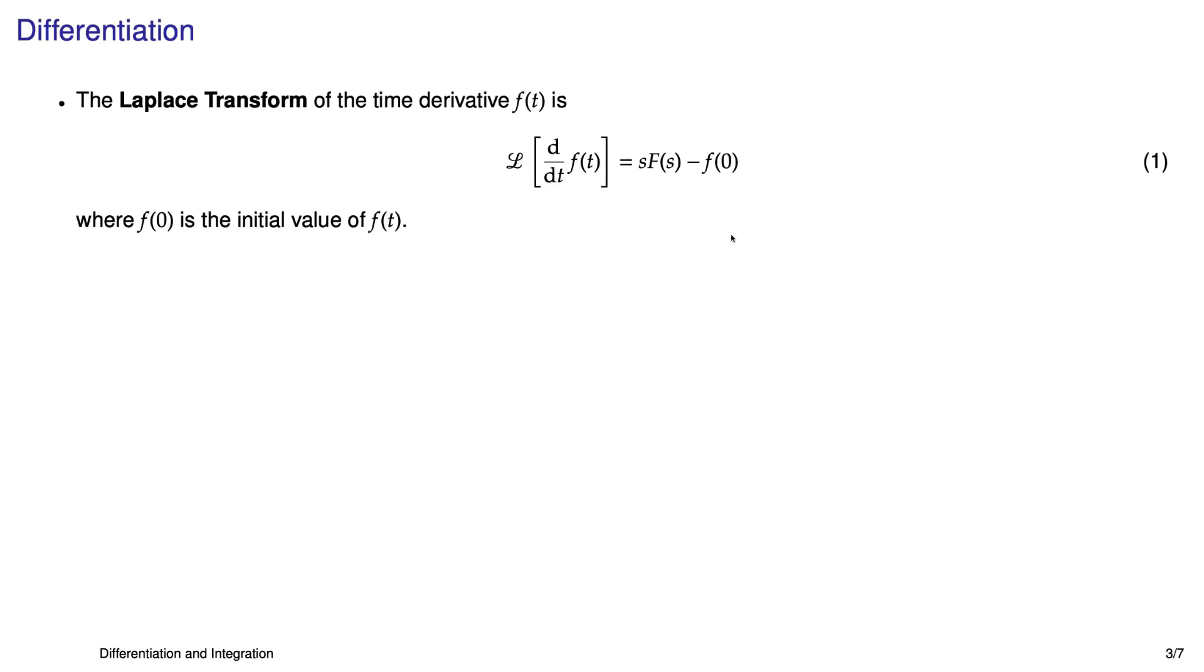Differentiation. The Laplace transform of the time derivative of some function f(t) is just s times the Laplace transform of f(t), s times F(s). Now, you also have to take into consideration the initial conditions. So it's actually shown in equation 1 where you subtract off f at time equals 0.